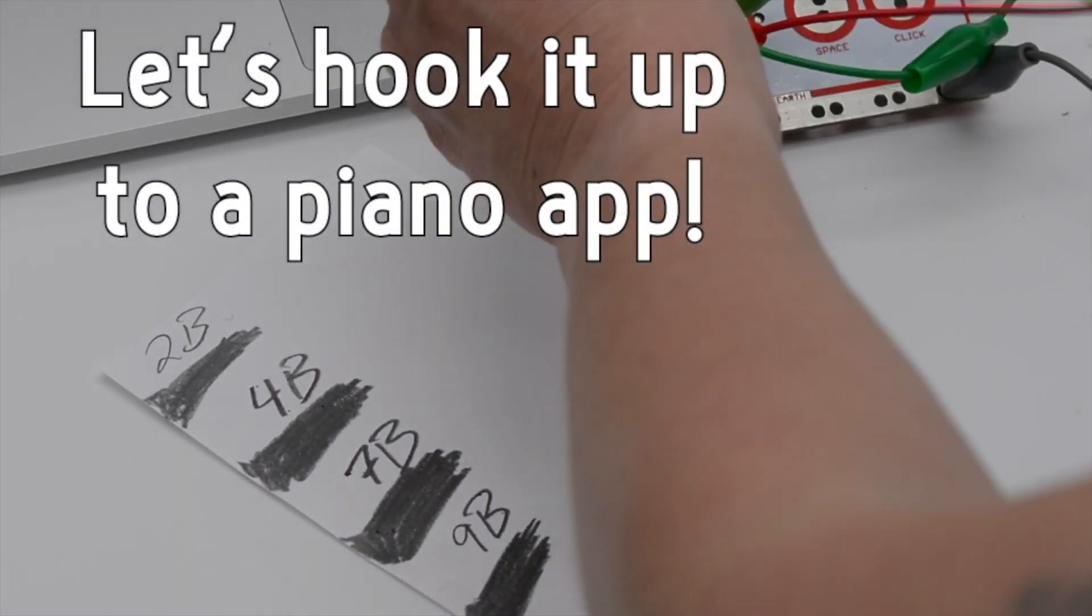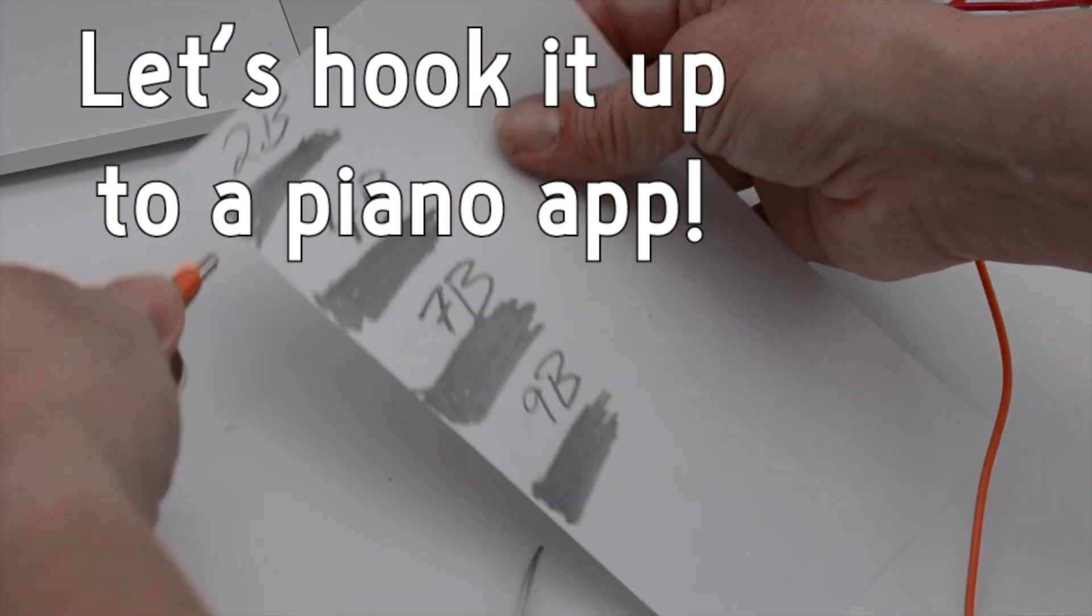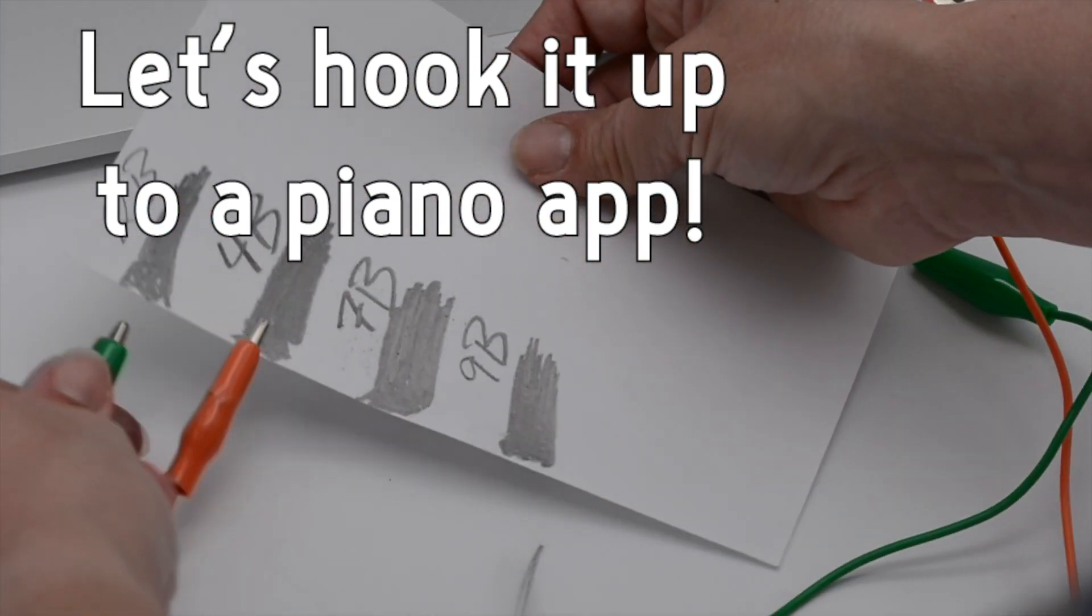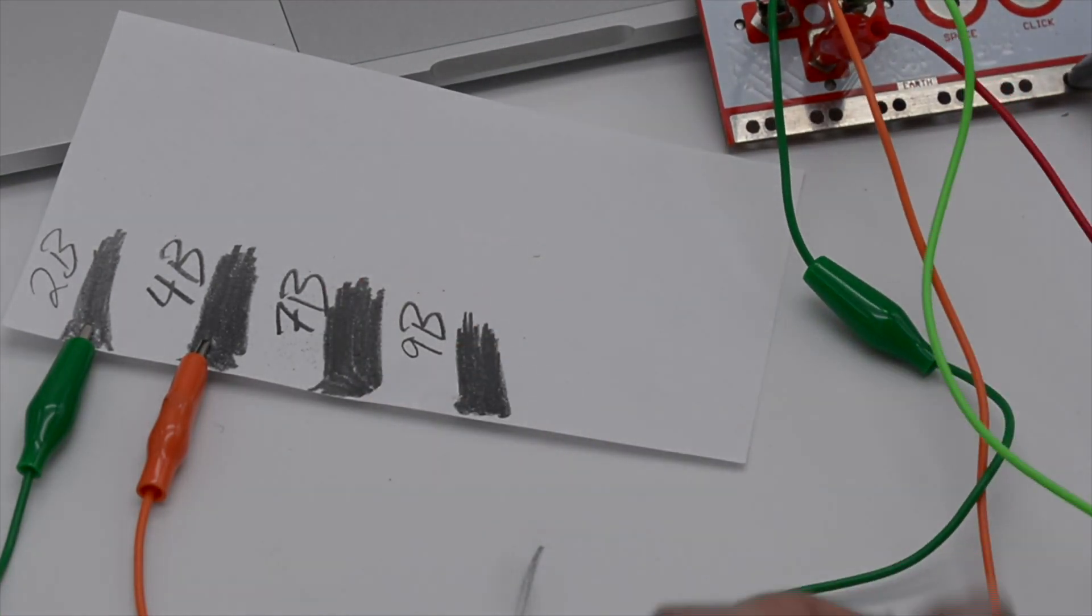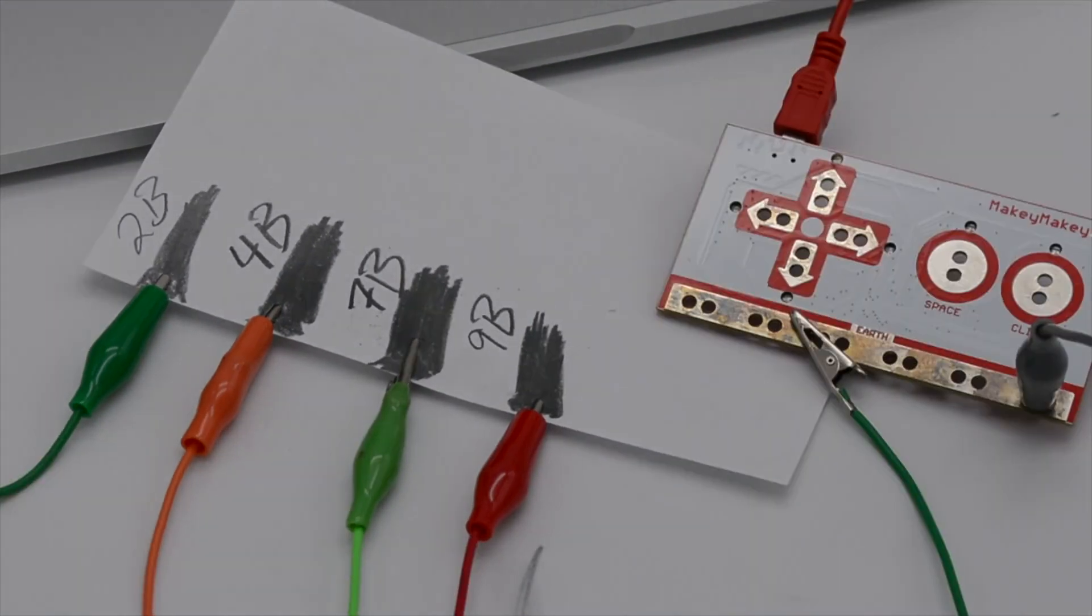You may have noticed that 9B looks a lot darker than 2B. That's because it's a softer lead pencil. So the higher the number, the softer the lead, and the more graphite goes on your paper, which means the more conductive it is. So let's plug them all up and see if it makes a difference, if Makey Makey can read all of them or if it changes anything.